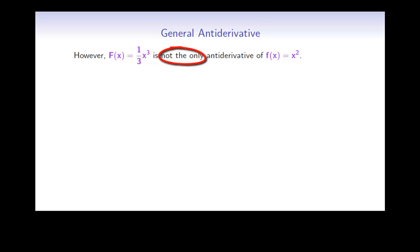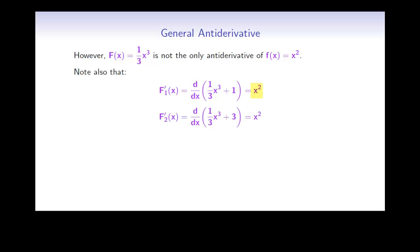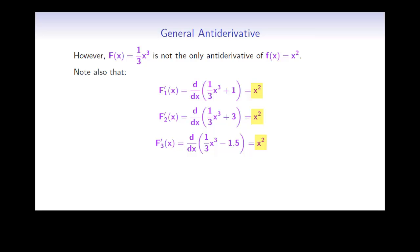However, this is not the only anti-derivative of x squared. For example, you could differentiate 1 over 3 x cubed plus 1 — the derivative of that is also x squared. Or 1 over 3 x cubed plus 3, or 1 over 3 x cubed minus 1.5 — differentiating these also gives x squared. This means that the general anti-derivative of x squared is 1 over 3 x cubed plus C, where C could be any constant.